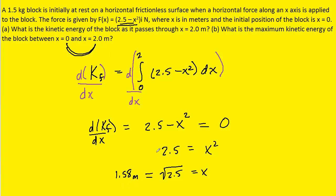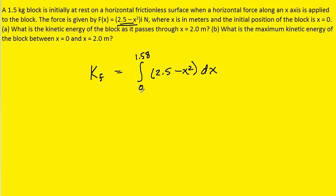Of course, notice that this time our final x value is the 1.58 that we just determined, because that's where the kinetic energy will have its maximum value. So we've already integrated this before. We had gotten 2.5x minus x cubed over 3, and then we're going to evaluate it from 0 to this new x value of 1.58.